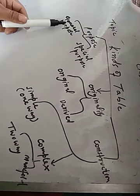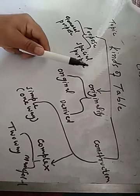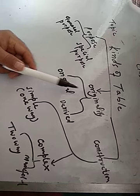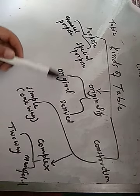Simple tables are also known as one-way tables. Complex tables are further divided into two-way tables and manifold tables. So the kinds of tables are: on the base of purpose — general purpose and special purpose; on the base of originality — original and derived; on the base of construction — simple (one-way, one characteristic), two-way (two variables), and manifold (more than two variables).